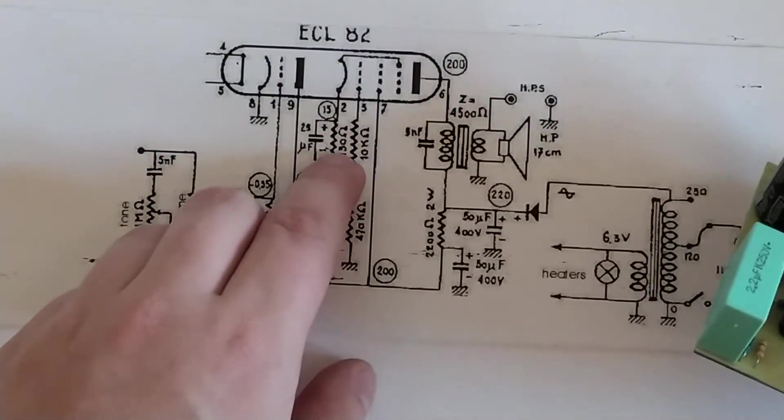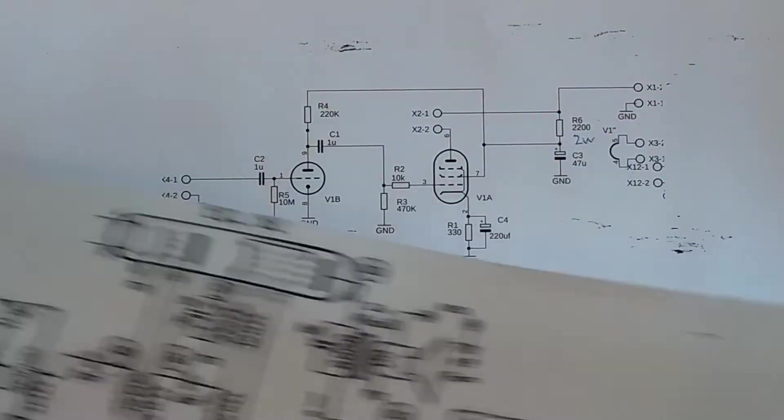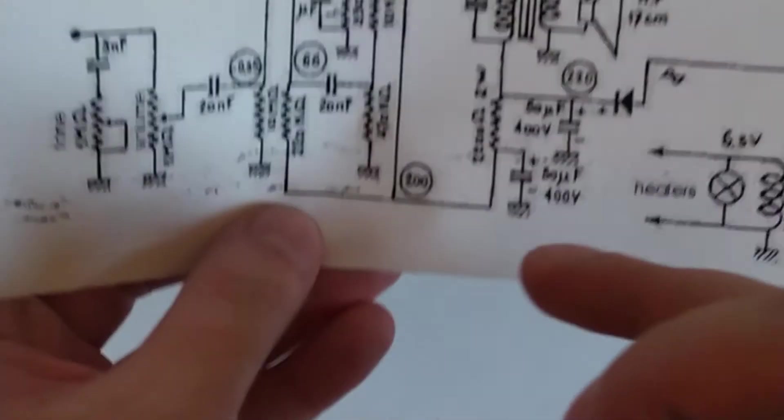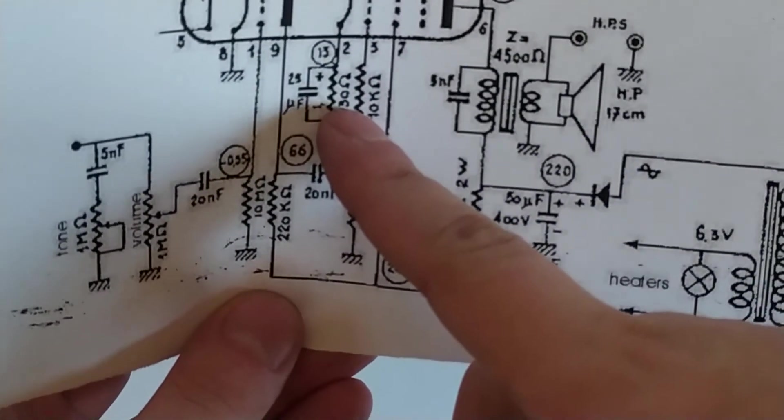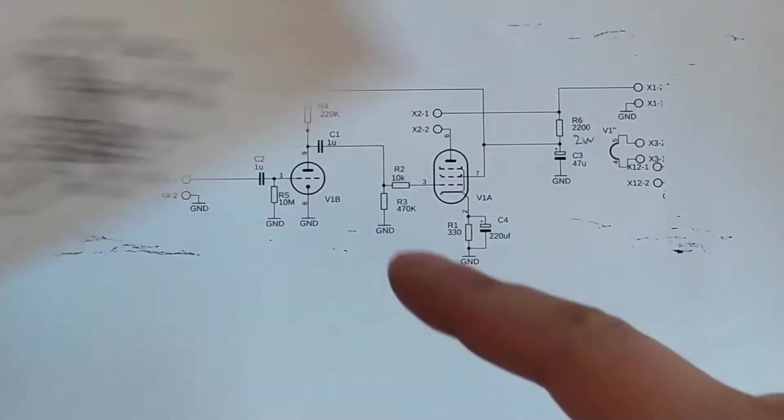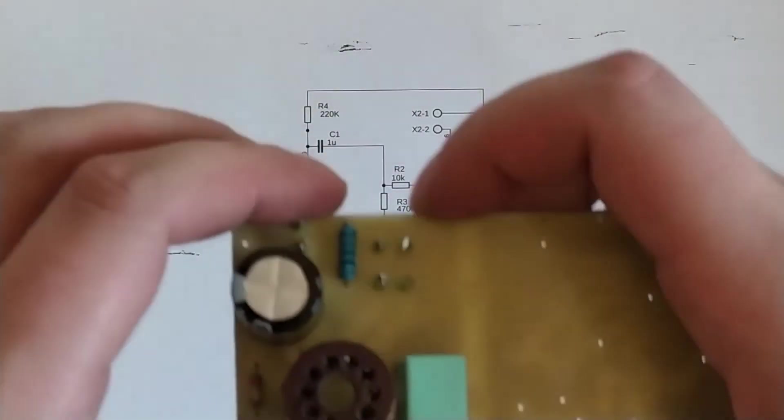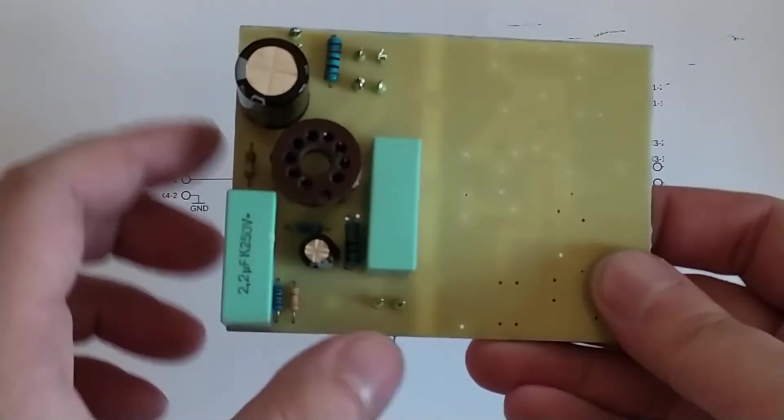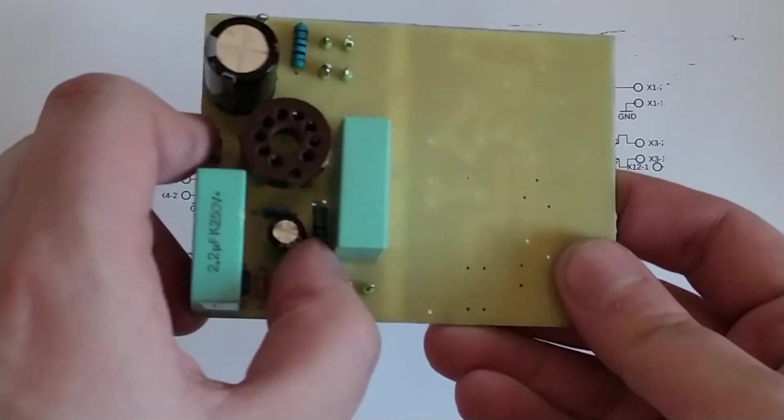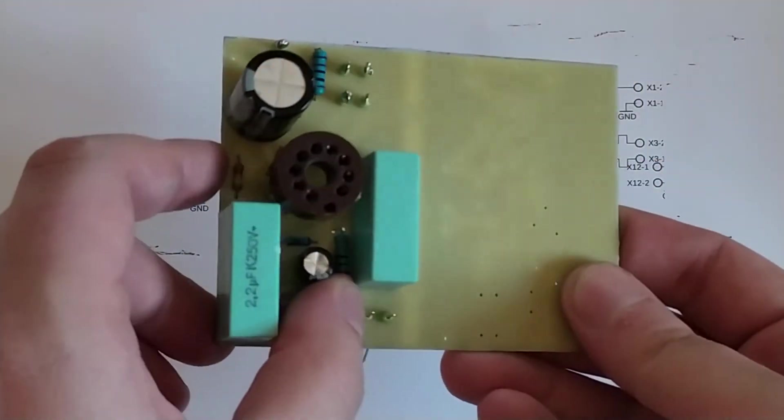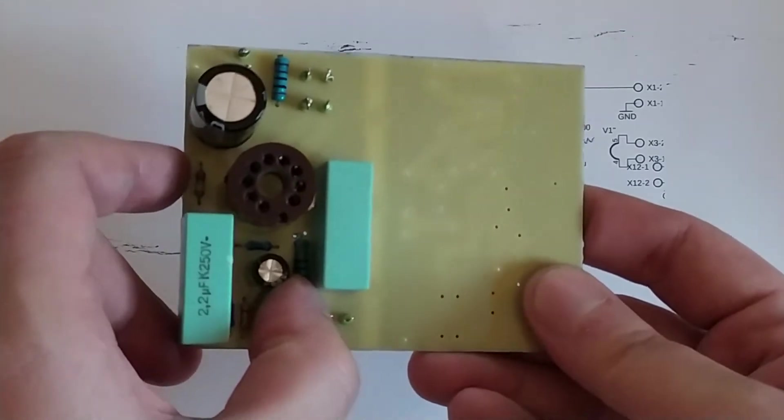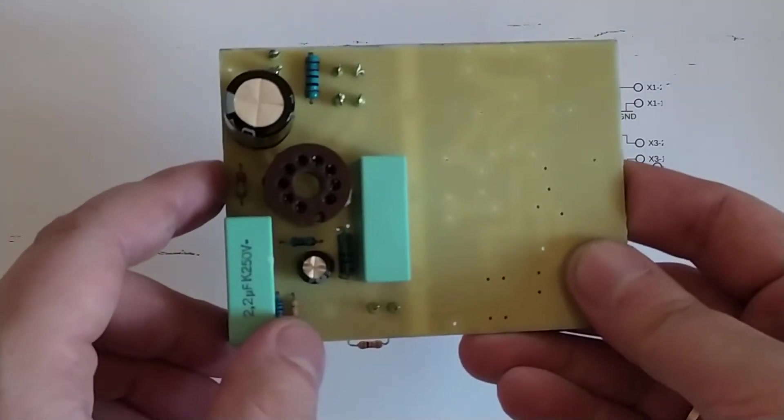This resistor here, 330 ohms - if an old schematic gives you no indication of what wattage that resistor should be, you should listen to your gut. Because I thought, yeah, this should probably be a two watt resistor. Two to five watts would be fine, so I put a two in there and that works fine.